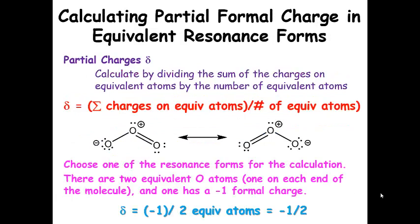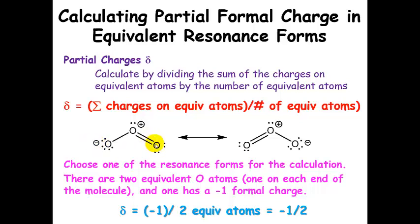What is a partial formal charge? It's the same thing as the regular formal charge, but now we have to smear that formal charge between two atoms — we divide it. We take the sum of the charges on the equivalent atoms. In this case the two oxygens are equivalent because they are the two involved in resonance. Then we divide by the number of equivalent atoms. Choosing one structure, negative one plus zero is negative one, divided by two equivalent atoms, gives us a partial formal charge of negative one-half on those oxygens.